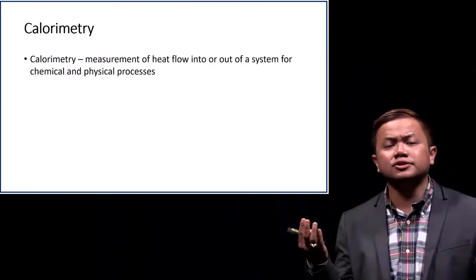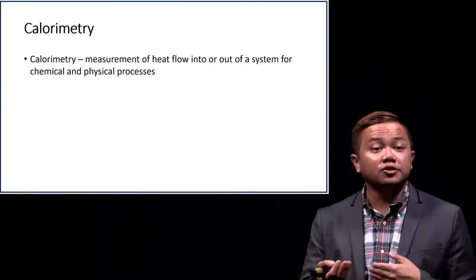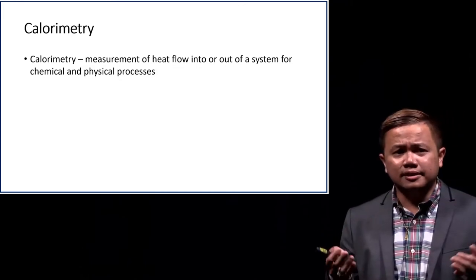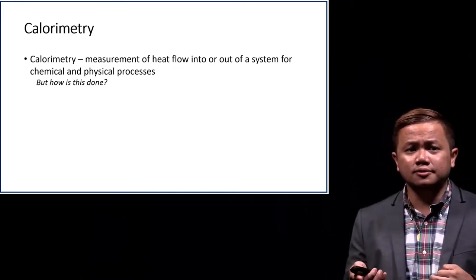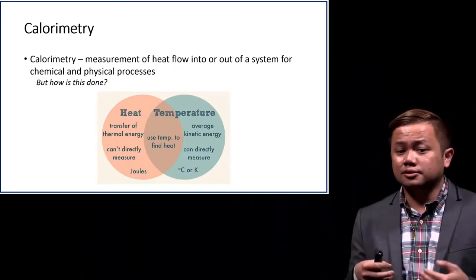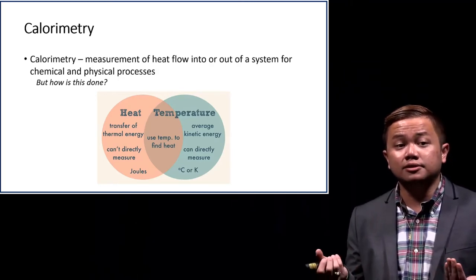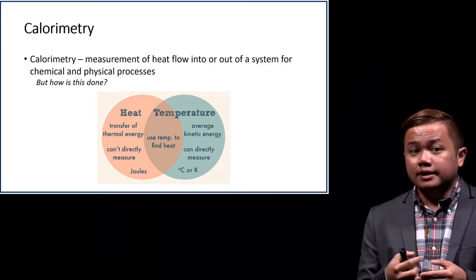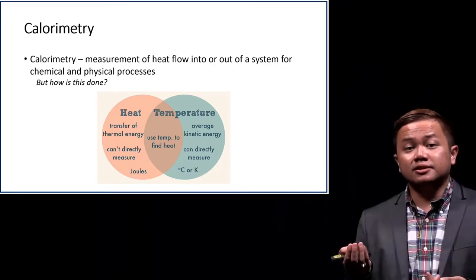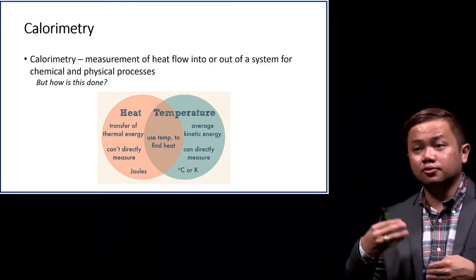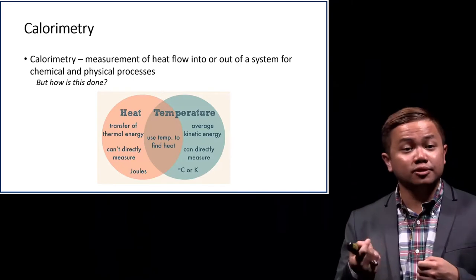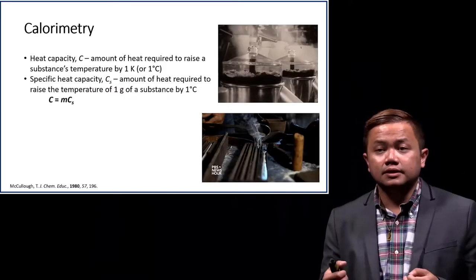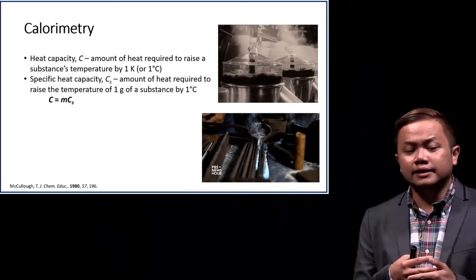Calorimetry is defined as the measurement of heat flow into or out of a system. There is no way to directly measure heat — there's no such thing as a heatometer — but there is a way to measure temperature. Measuring temperature enables us to relate it to the heat released or absorbed by the system, and this is basically how calorimetry works.